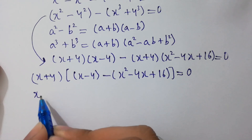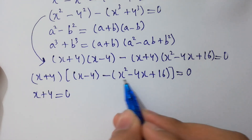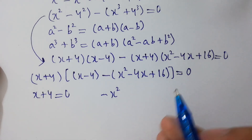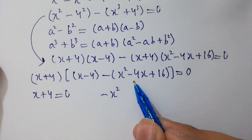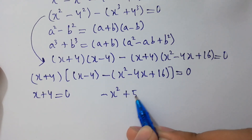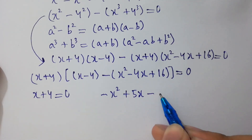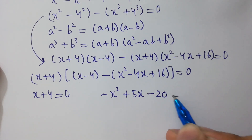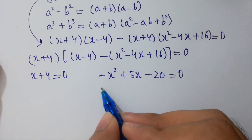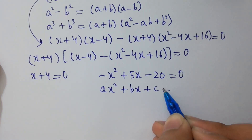It will be x plus 4 equals 0, or combining the bracket: minus x squared plus 4x plus x equals 5x, minus 16 minus 4 equals minus 20, giving minus x squared plus 5x minus 20 equals 0.